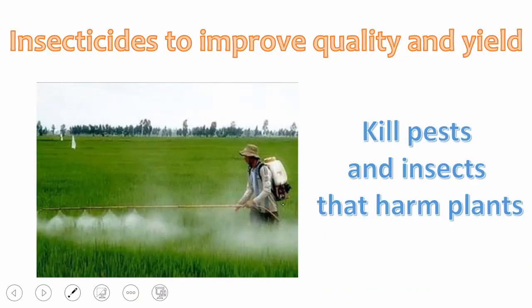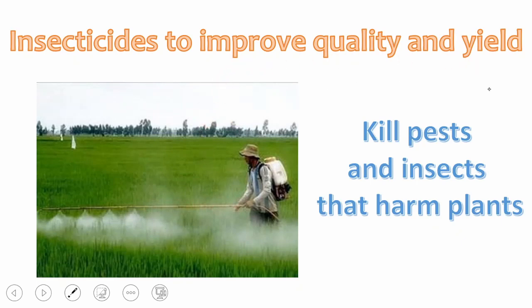Another factor that helps farmers is insecticides. Insecticides kill pests and insects that harm plants. Those insects colonize on plants and use them as a source of food, making the plants sick and decreasing the yield. Insecticides kill these insects and this improves both the quality and the yield.